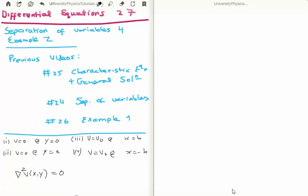The previous videos to this which are relevant are number 4 where I discussed in general the theory of separation of variables, 25 where I showed you how to solve the characteristic equation and what the general solution for a second order homogeneous linear differential equation with constant coefficients is. In video number 26 I showed example 1 of using separation of variables.